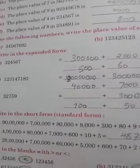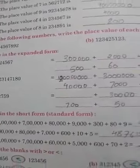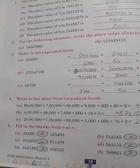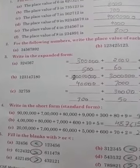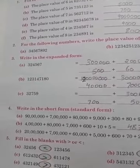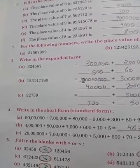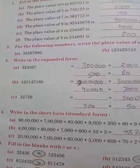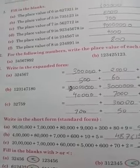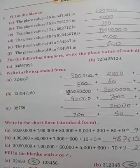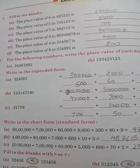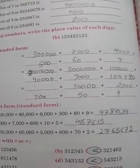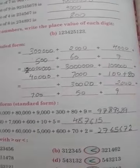Expanded form is also related to the place value chart. You just start writing the place value of the greatest digit, then lower, then lower. By that way you can write the expanded form.